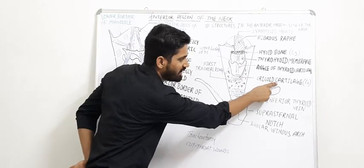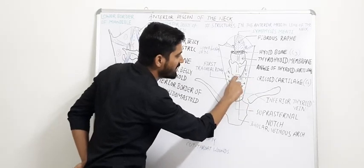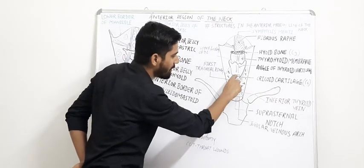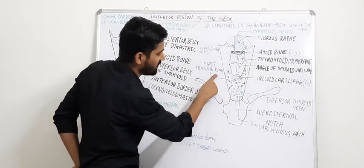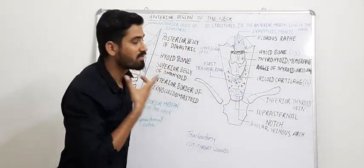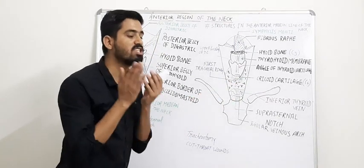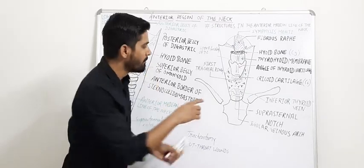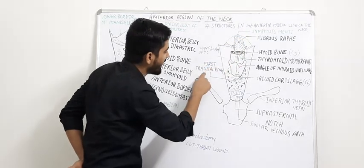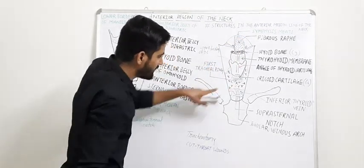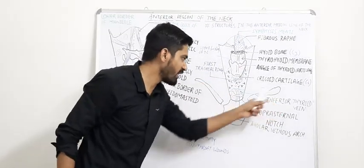The cricoid cartilage is at the level of C6. Between the thyroid cartilage and the cricoid cartilage, there is the cricothyroid ligament. After the cricoid, there is the first tracheal ring. The thyroid gland has two lobes, and between them is the isthmus. The isthmus is a key structure in the anterior midline of the neck.